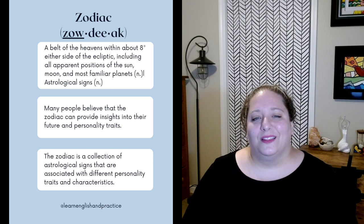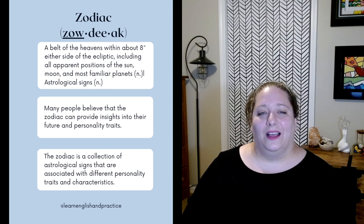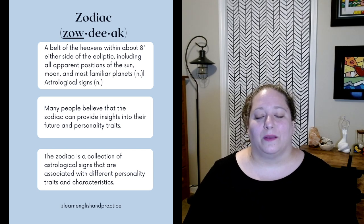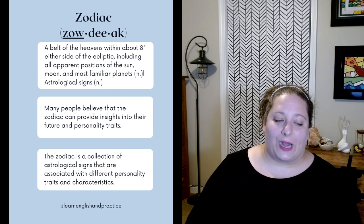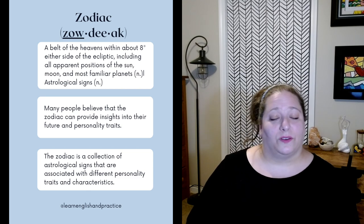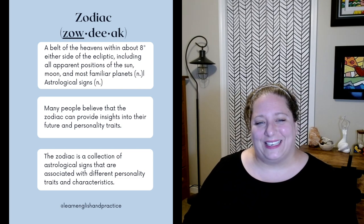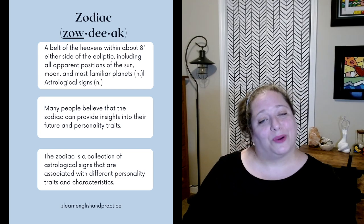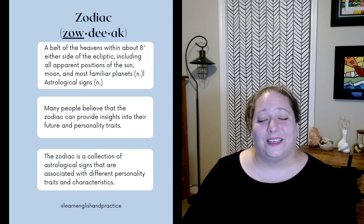Zodiac. The literal meaning of zodiac is a belt of the heavens within about eight degrees either side of the ecliptic, including all apparent positions of the sun, moon, and most familiar planets. Typically, culturally, when people are referring to the zodiac — especially in America — they're referring to the sign that corresponds with your birthday. So for example, there's Aries, Taurus, Cancer, and many different types of astrological signs. Examples: Many people believe that the zodiac can provide insights into their future and personality traits. The zodiac is a collection of astrological signs associated with different personality traits and characteristics.